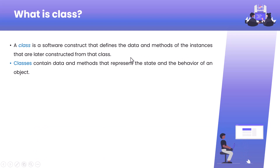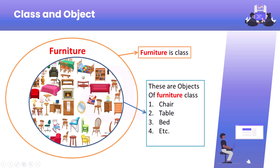We'll use an analogy to help you understand what data and methods are. In this slide you can see that we can create a class named 'Furniture.' For this furniture class there can be different types of furniture — for example, a furniture object can be a mirror, a bed, a chair, or a table. So chair or table is nothing but an object of the furniture class.